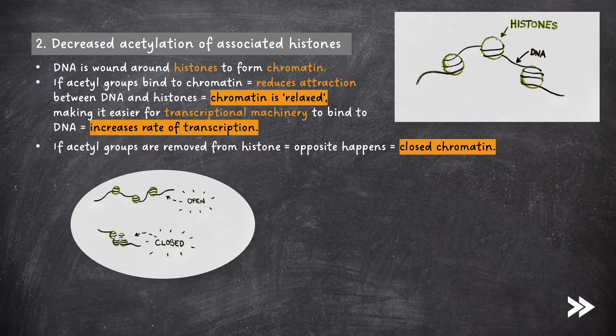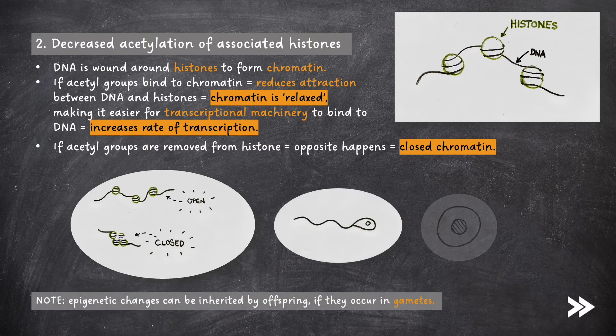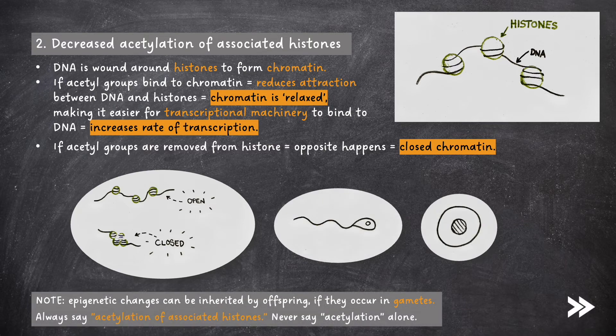Note that epigenetic changes can be inherited by offspring if they occur in gametes. Also, remember to always refer to acetylation of associated histones — never say acetylation by itself.